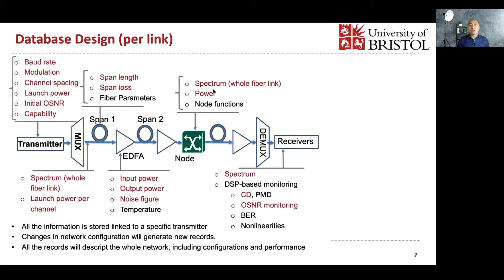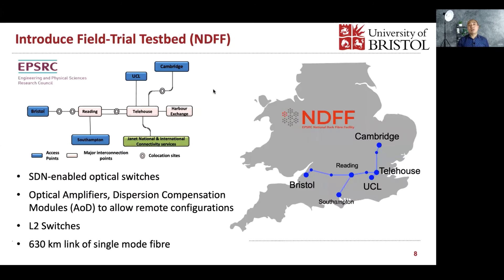Looking at the database design in more detail: we design it on a per-link basis, associating all parameters related to the link — from the transmitter to key devices including transmission links, bands, EDFAs, and nodes, then to the receiver. We collect all this information in time in our database, linked to the transmitter, recording any change in the network. So we collect all configuration and monitoring information into the database.